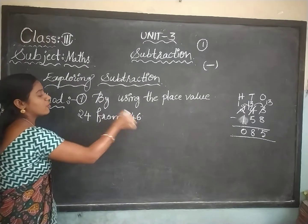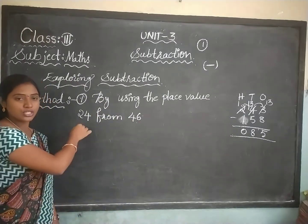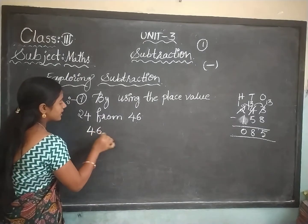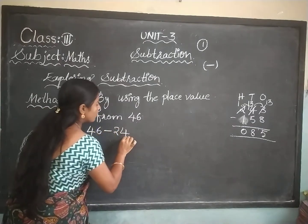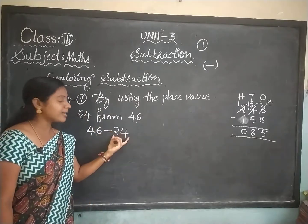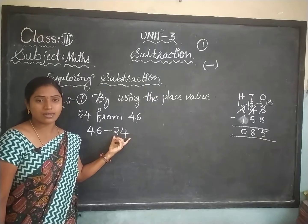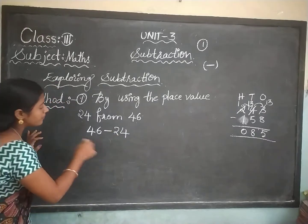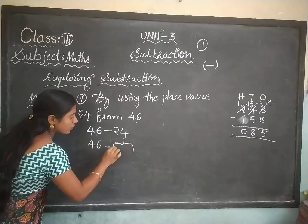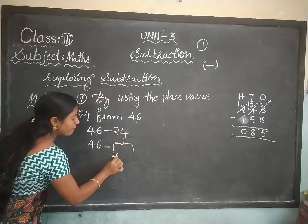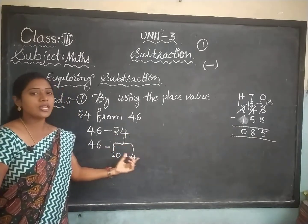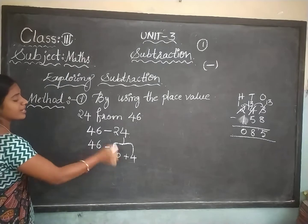The given question is 24 from 46, meaning 46 minus 24. In this method, you have to break the second number. 46 stays as it is; 24 you should break. 24 means 20 plus 4. Now you should calculate 46 minus 20.